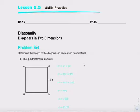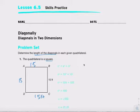This is problem number one. I want you to explain a square. Anytime you see the word square, just label them all — 15 feet, 15 feet, and 15 feet. You'll see it better. Here they're solving for: determine the length of the diagonal of each given quadrado. So find C.